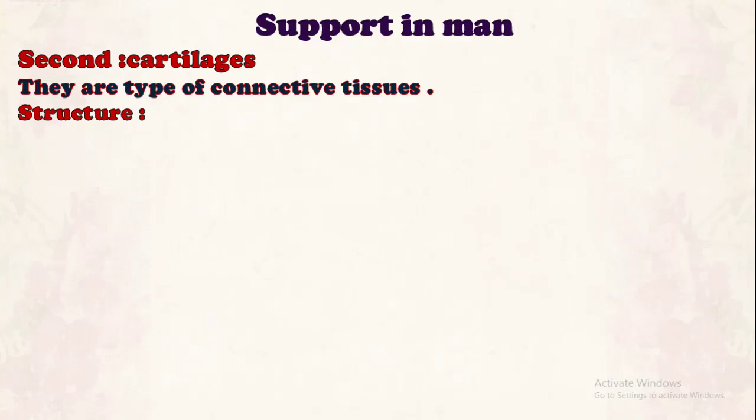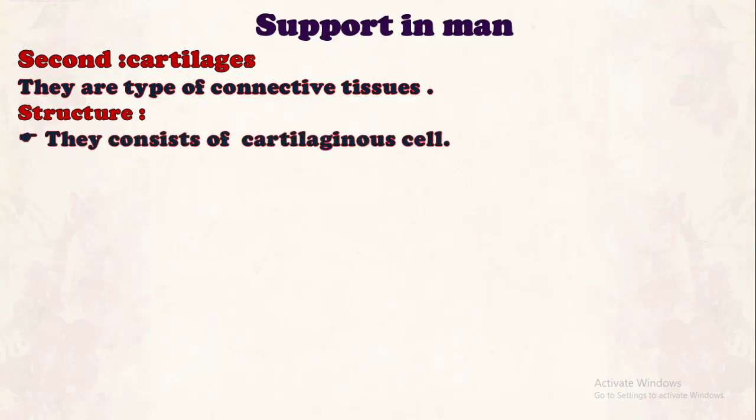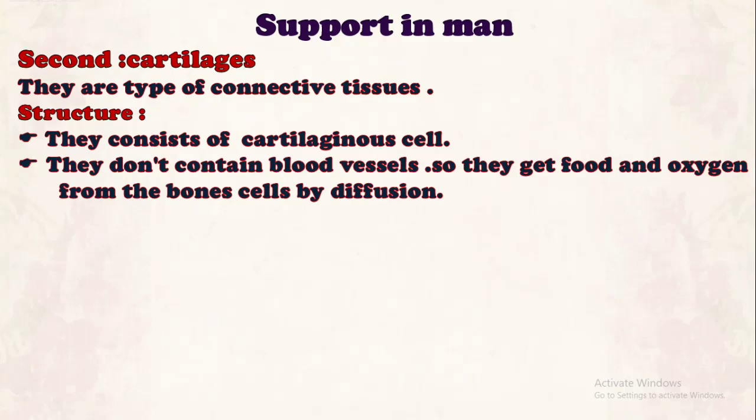The structure of cartilage: they consist of cartilaginous cells. The cartilaginous cell differs from bone cells — it is empty of calcium substance, so cartilage is flexible or elastic. Cartilage does not contain blood vessels, so it gets food and oxygen from the bone cells by diffusion. Oxygen transfers from high concentration in the bones to the cartilage.